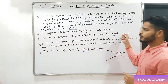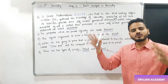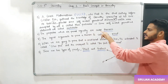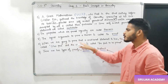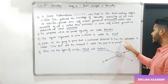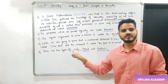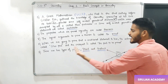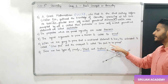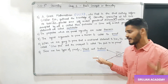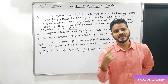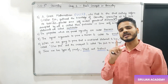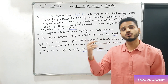Next है proof. The logical arguments to prove a theorem are called proof. जब हम यह prove करते हैं कि a conditional statement is true, its antecedent part is called the given part — if के बाद का part जो है वो given part है. और then के बाद का जो consequent है, वो रहता है 'part to be proved.' दो types के proofs होते हैं — direct proof और indirect proof. Next video में हम direct proof देखेंगे, और indirect proof हम lesson 2 में देखेंगे.